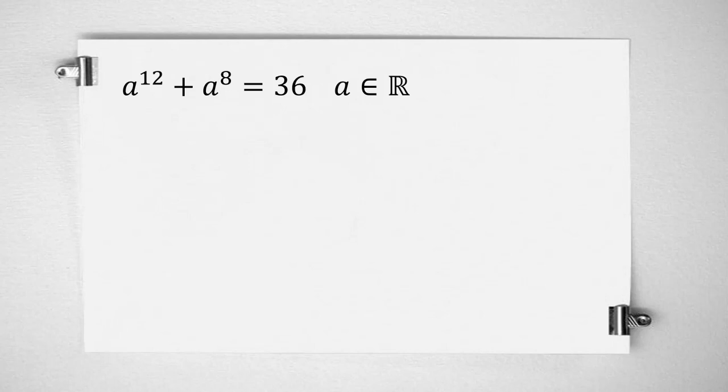Okay, so 12 and 8 both of them are multiples of 4. Let me tell you an important power rule: x to the m to the n equal to x to the m times n.